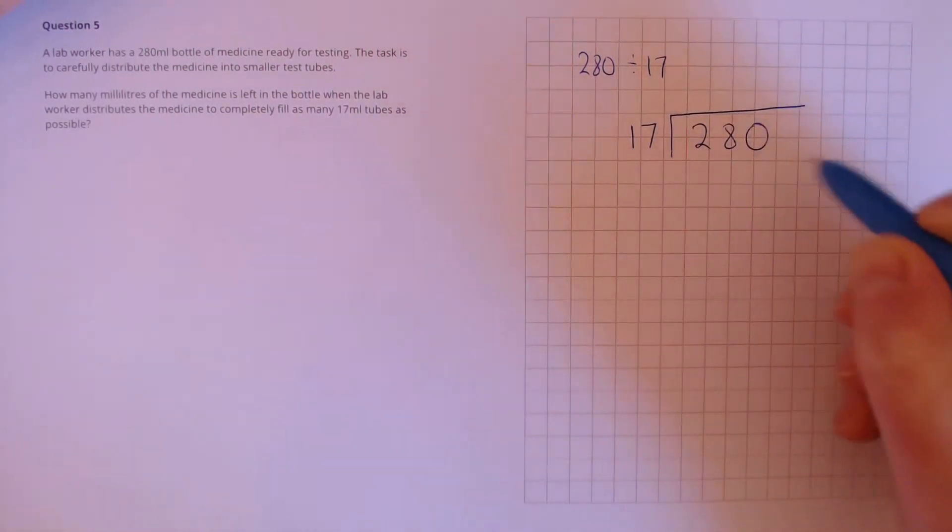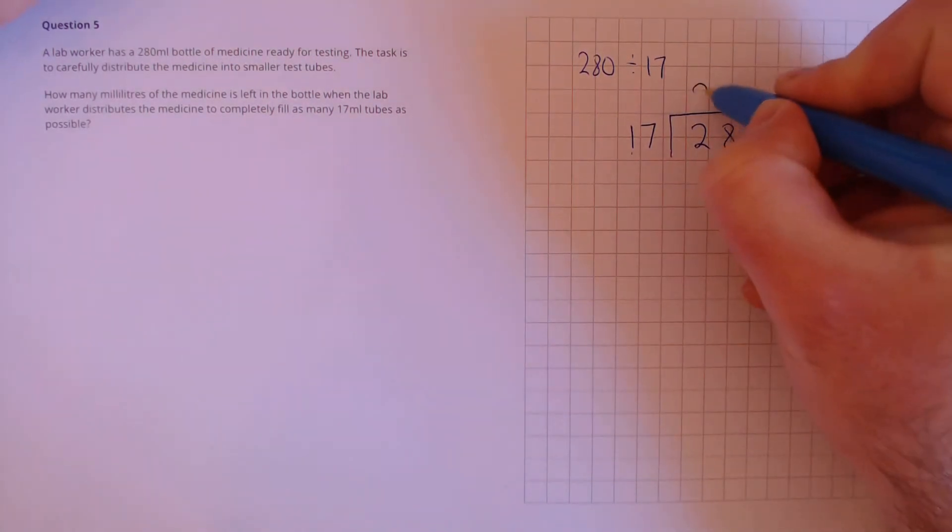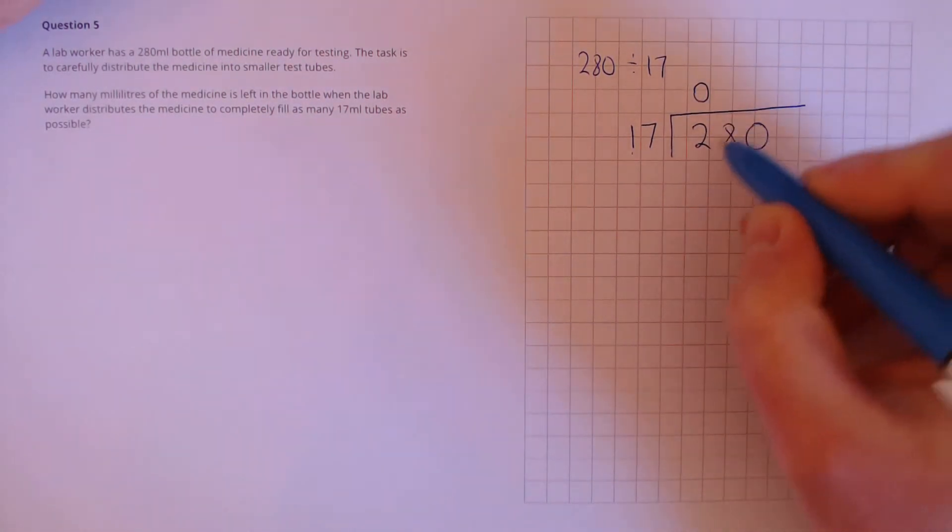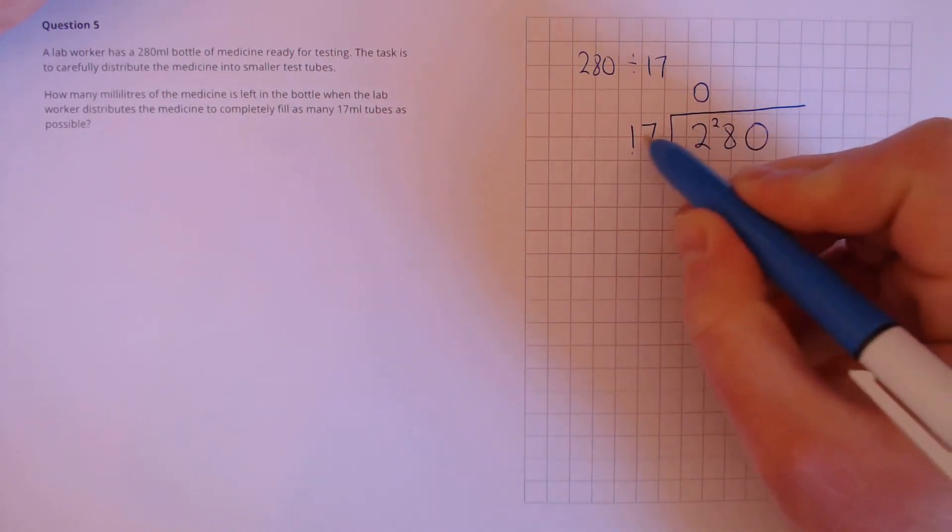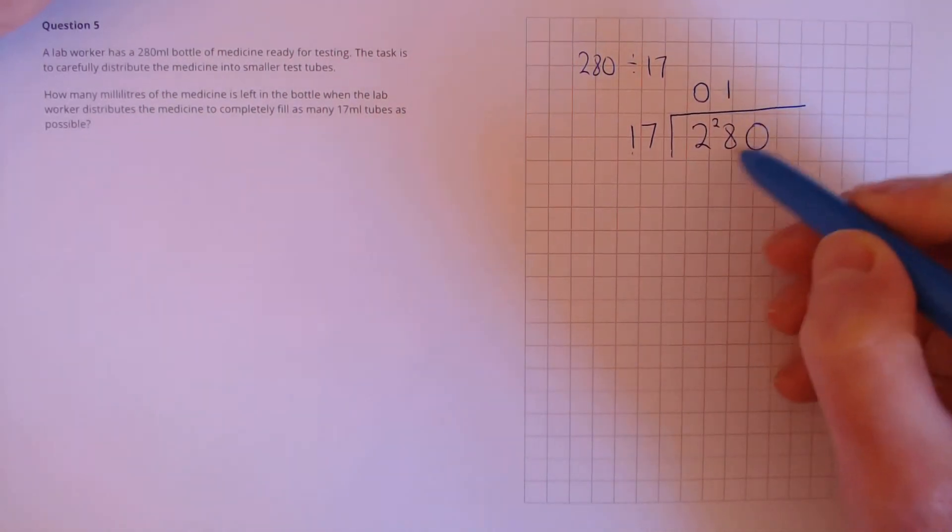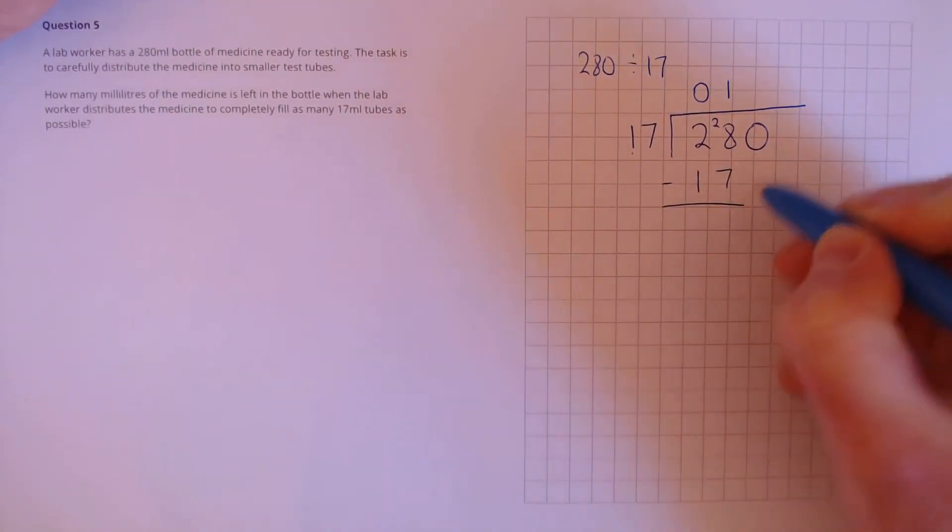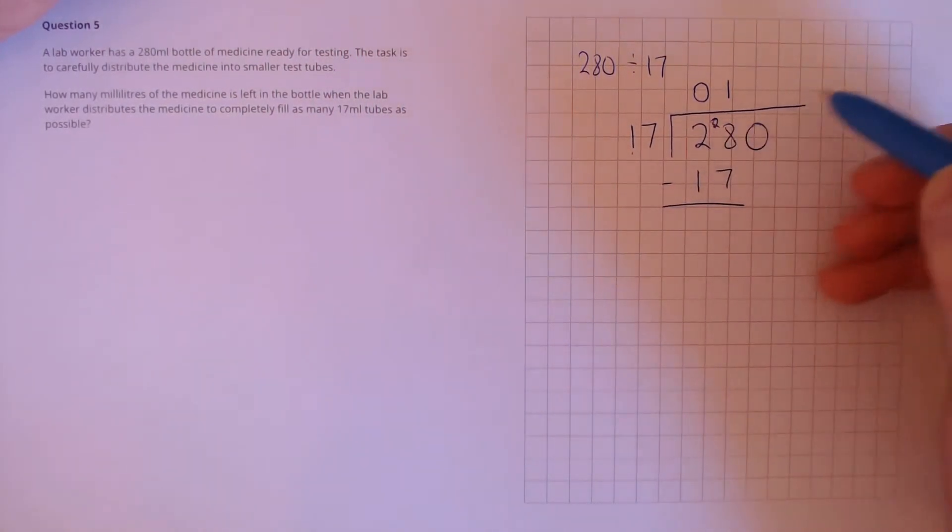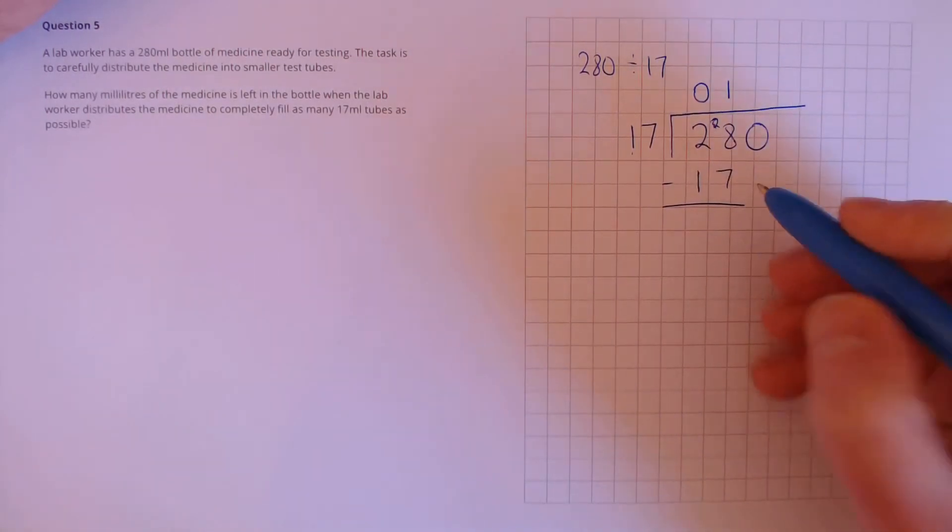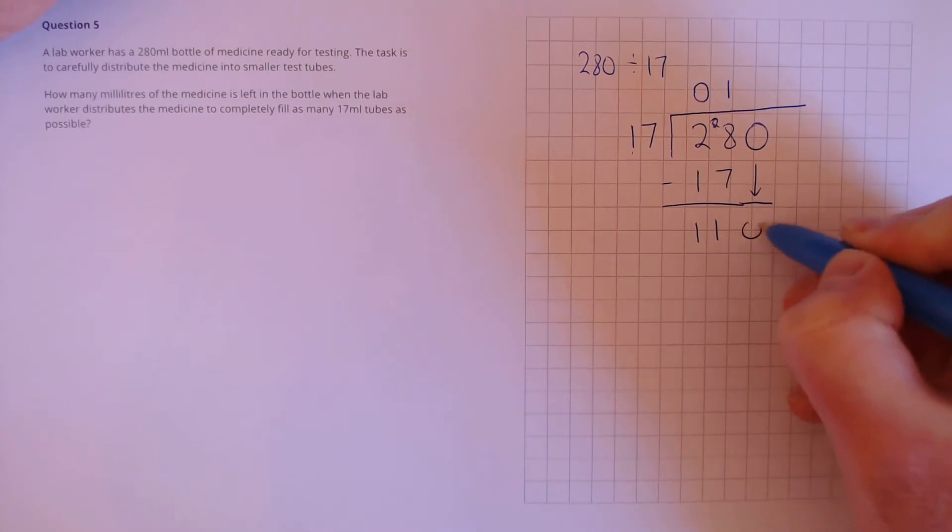17 into 280. First, we see, does 17 go into 2? No, it doesn't. So, we put a 0 here. And we look at 17s into 28. That goes in once. And then we'll take away 17 from 28. 28 minus 17, that's 11. And bring down the next digit to 110.